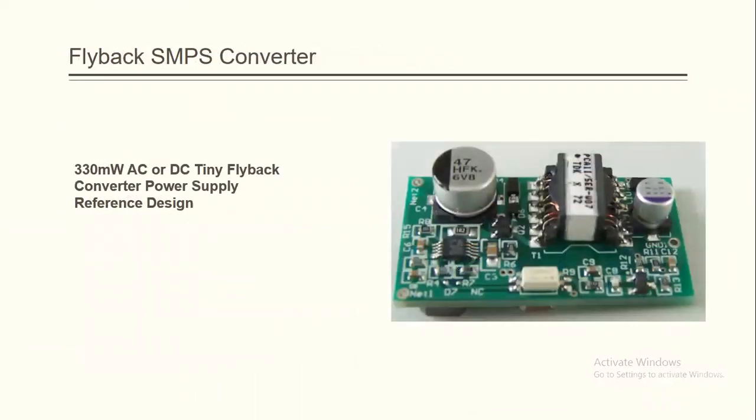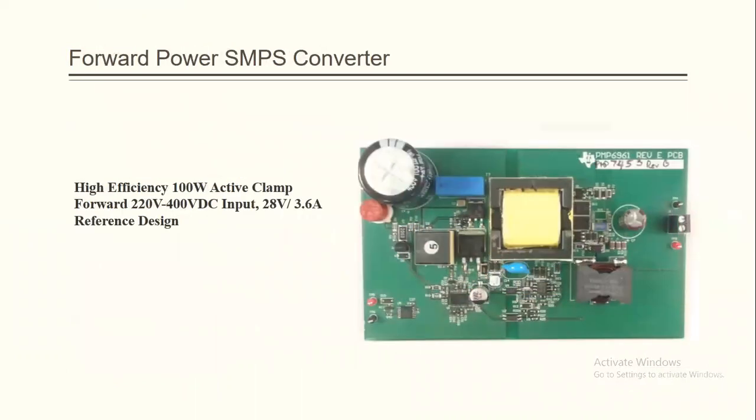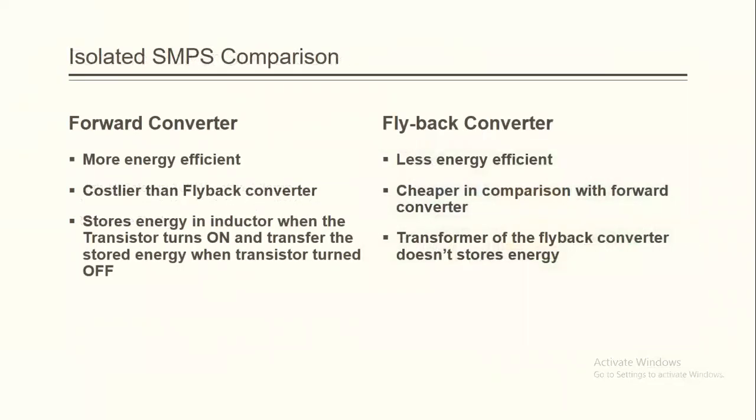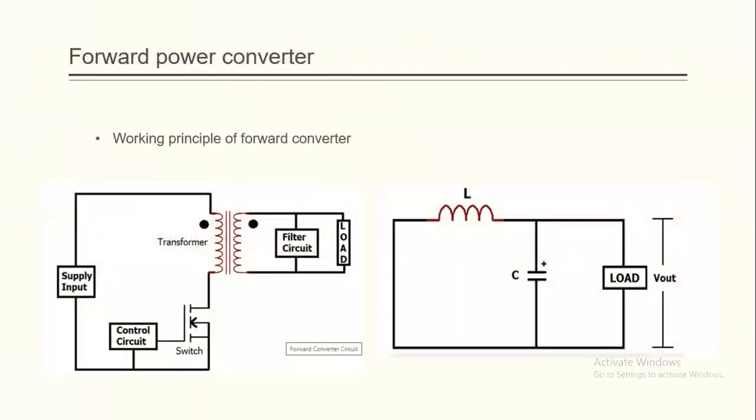As for the flyback converter, it's mainly for power energy output less than 100 watts, while forward power converter is for applications that want more output power, more than 100 watts. That's why we go through the forward power converter. It has more efficiency, it costs a little bit more.